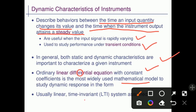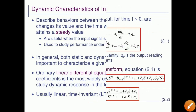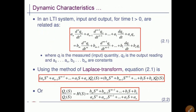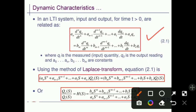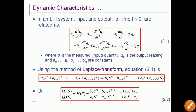Usually linear time invariant (LTI) systems are used for describing the behavior of dynamic characteristics of instruments. Here, in the differential equation shown in the box, q_o is the output quantity and q_i is the input quantity. q_i is the measured input quantity and q_0 is the output reading.